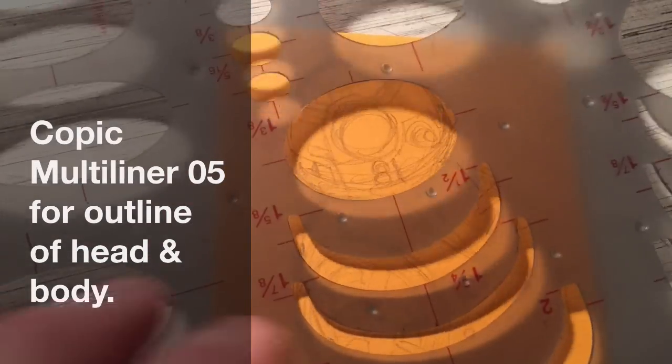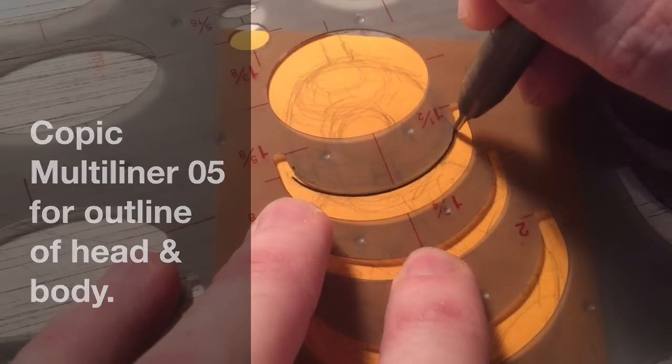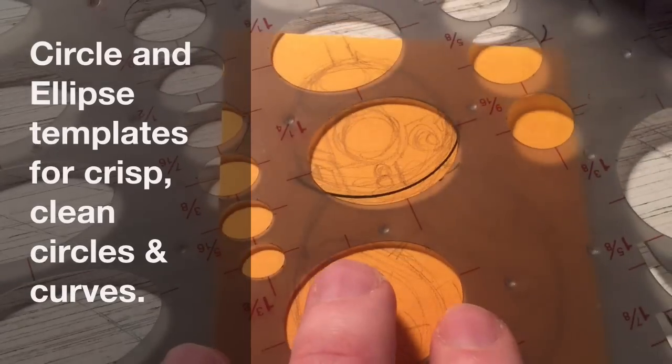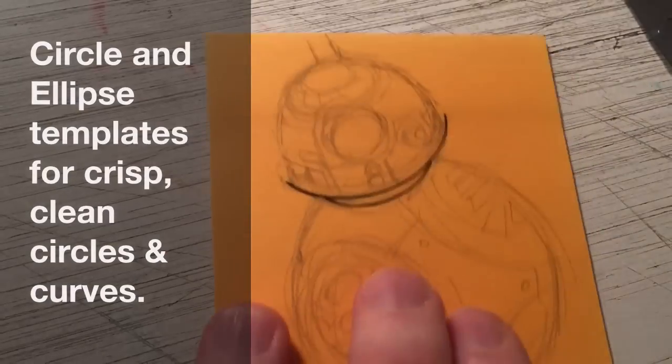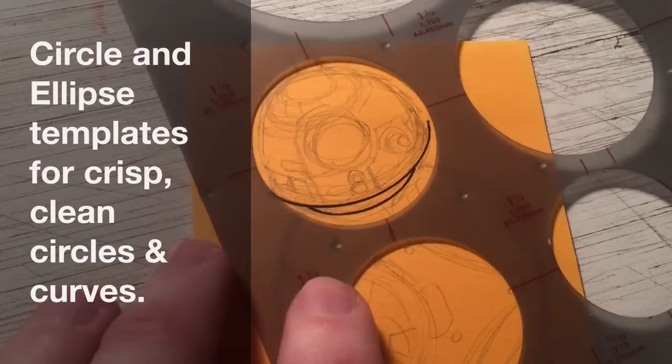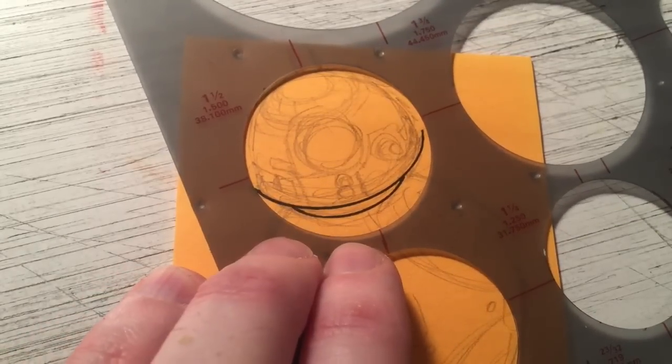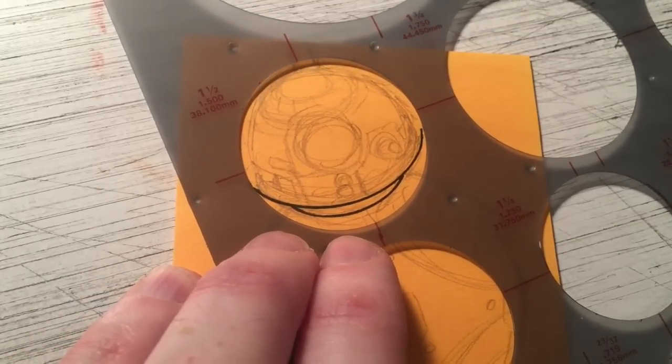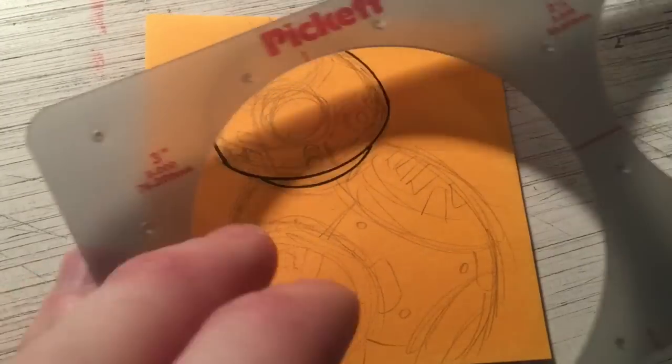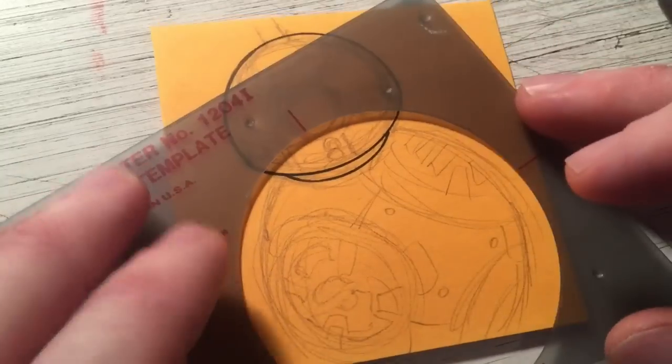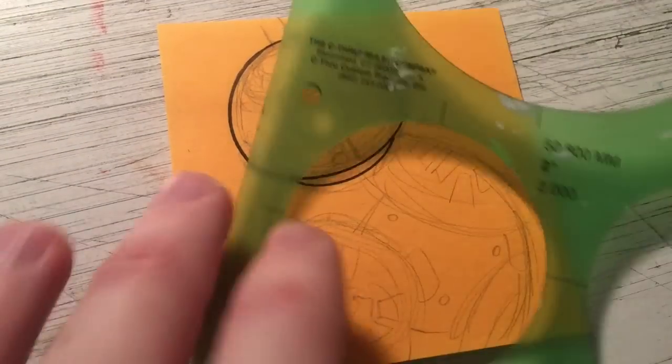From this, I can see where I need to put my finished ink lines. Using a Copic Multiliner 05, I'm going to do the outline of the head and body. Using ellipse and circle templates, drafting tools which I use quite frequently, to keep my lines crisp and clean. An important thing to know about circle and ellipse templates is many of them will have these little bumps on the plastic, which keeps the plastic raised off the paper just a little bit. You want to make sure you have the bump side down.